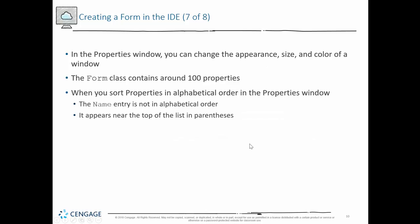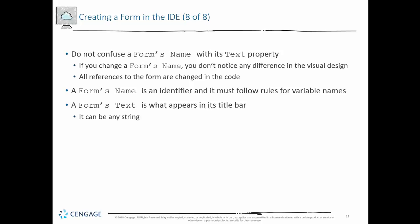In the Properties window, you can change the appearance, size, and color of the window. Note that the form class has around 100 different properties. By default they're in alphabetical order, except the name property appears at the top. Do not confuse the form's name with its text — I just showed you that distinction.